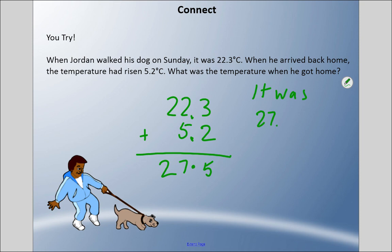If I was to do the left to right method, I add all the whole numbers first. 22 plus five is 27. Then I add the tenths—I get 0.5. Add them together.